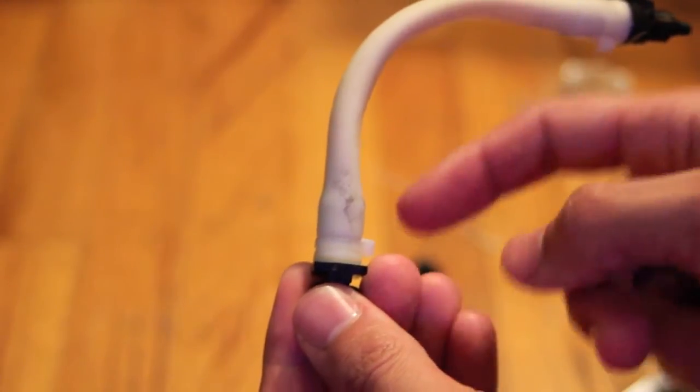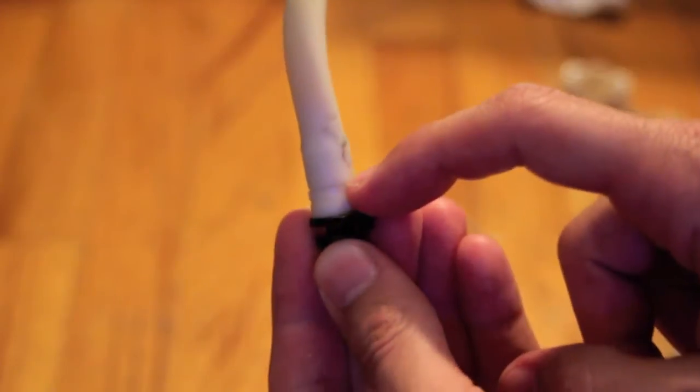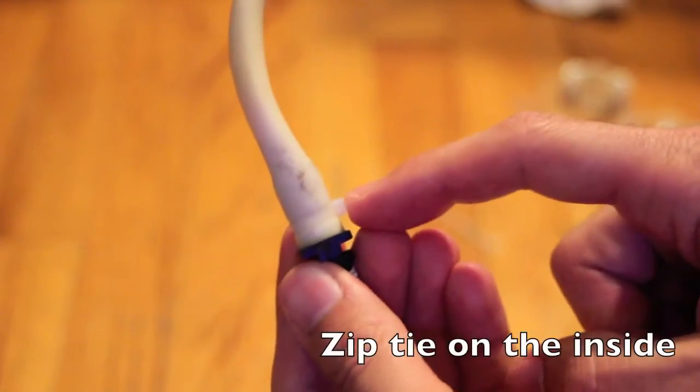So when you put your zip ties on, make sure it's in the groove just like these are here, okay? And the zip ties facing sideways. All right, so let's go ahead and do that now with the new tubing.